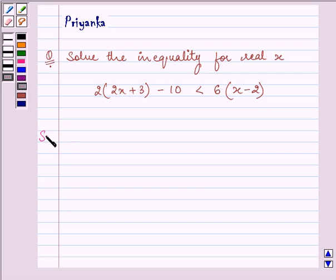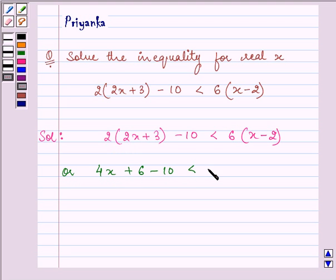Let us start on rewriting the given inequality once again. We can see that the next step will be removing the brackets, and on doing so we have 4x plus 6 minus 10 is less than 6x minus 12.